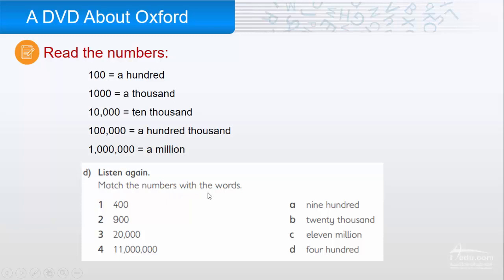Now, let's match the numbers with the words. One. Four hundred. Two. Nine hundred. Three. Twenty thousand. And four. Eleven million.